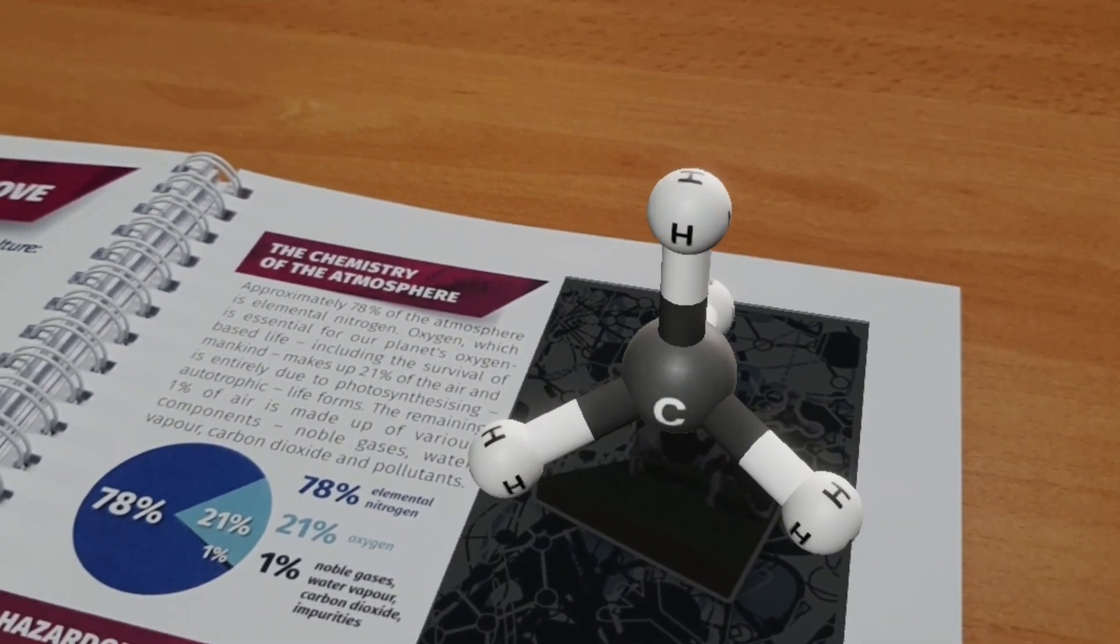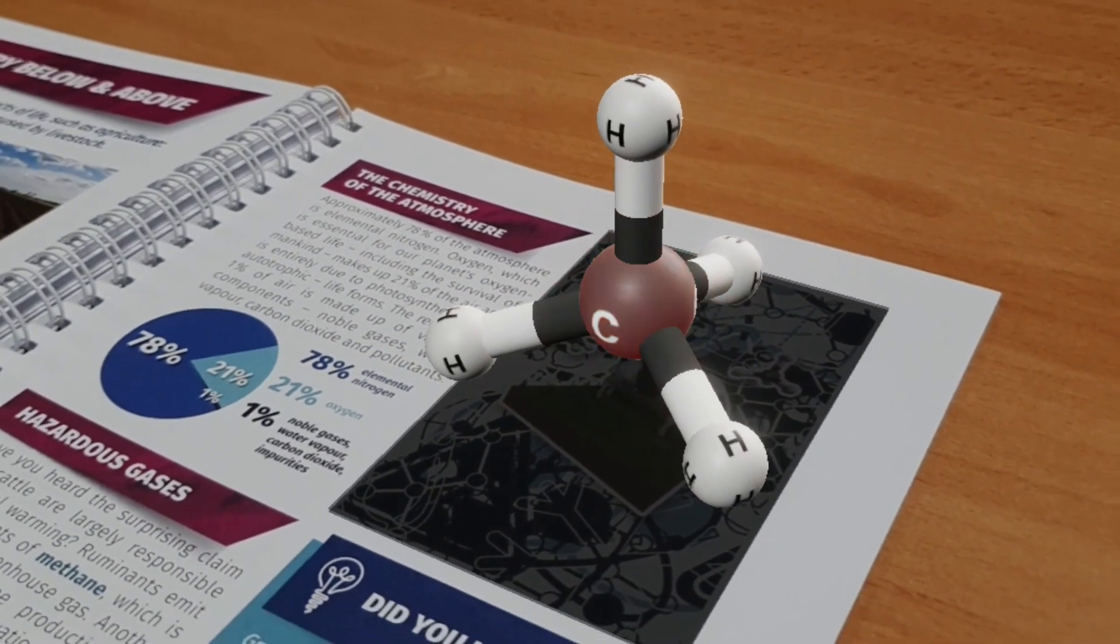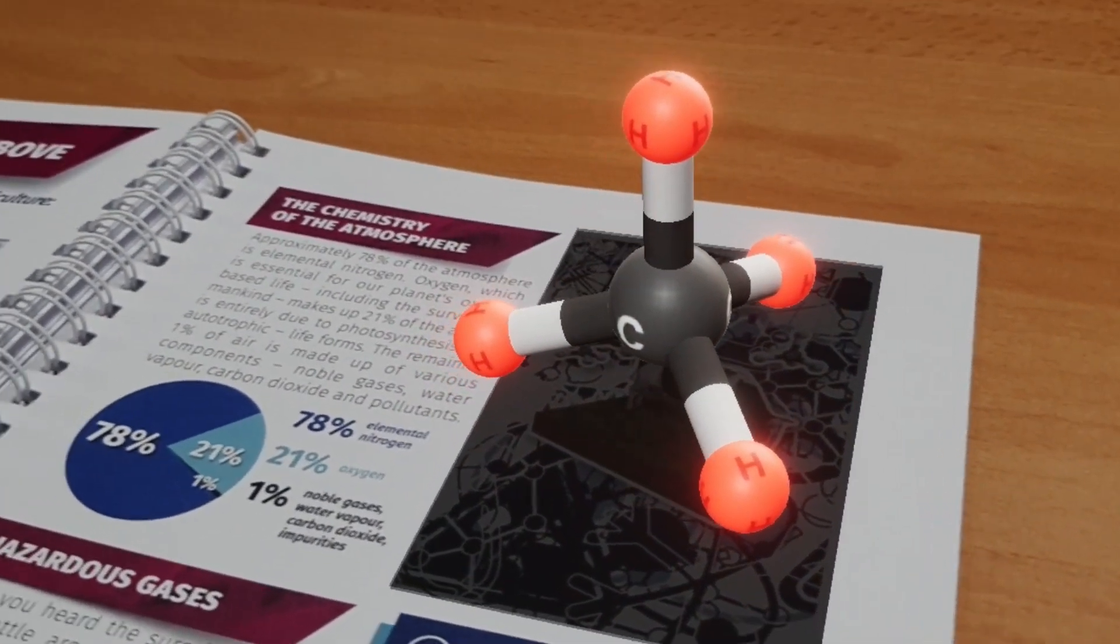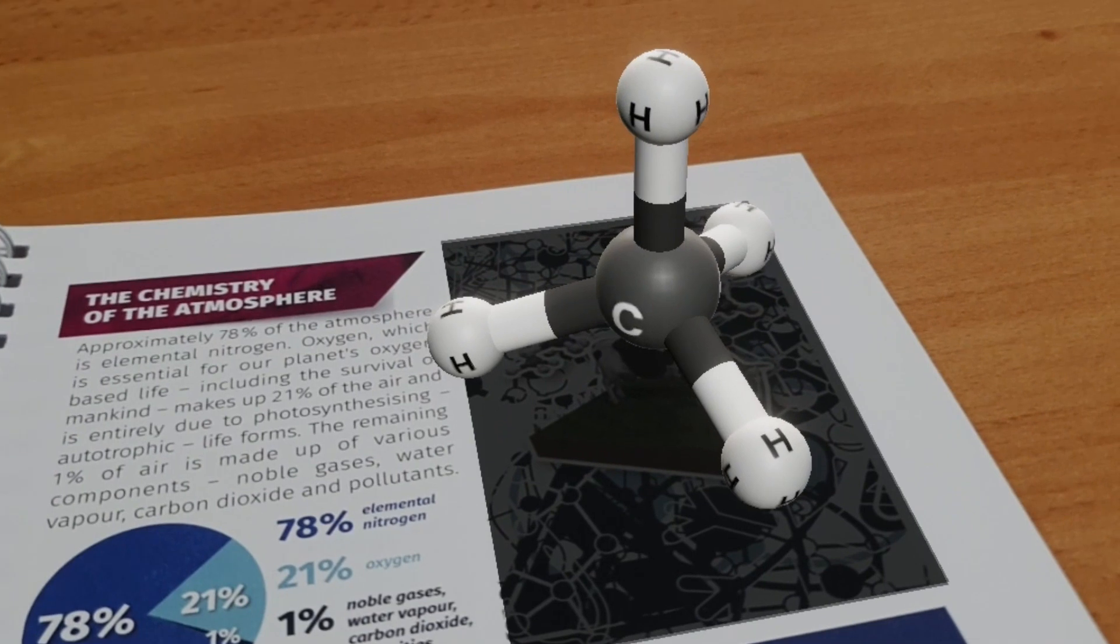Methane, the simplest hydrocarbon, is an organic compound consisting of one carbon atom and four hydrogen atoms.